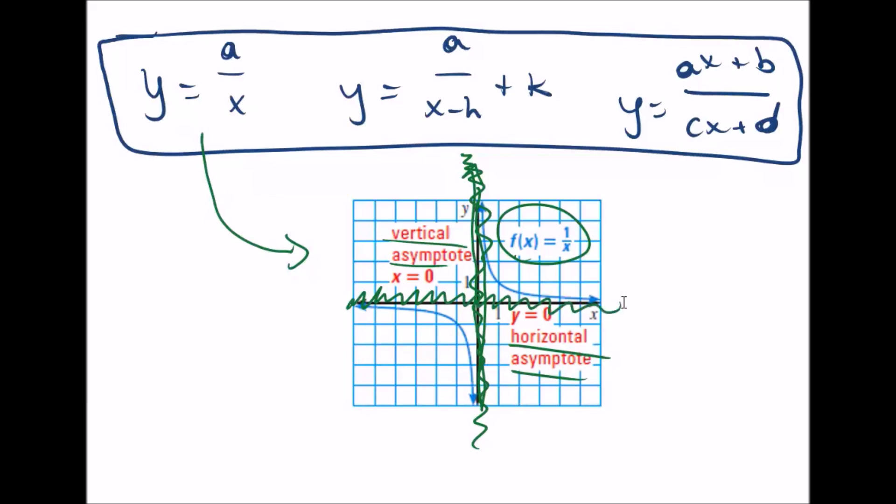Now these asymptotes will shift around. x equals zero is the most basic one. But of course, sometimes the asymptote will be x equals negative two or x equals five, whatever. The horizontal asymptote will shift up and down as well.